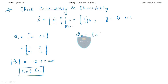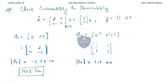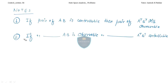Now for observability: Qo = [Cᵀ, AᵀCᵀ]. Cᵀ = [1, 1]ᵀ. Multiplying Aᵀ with Cᵀ gives [1, 1]ᵀ. The determinant of Qo is 1 − 1 = 0, so the system is also not observable. This system is both not controllable and not observable.